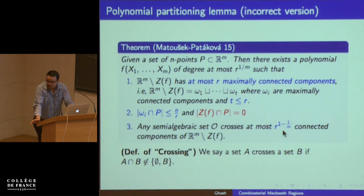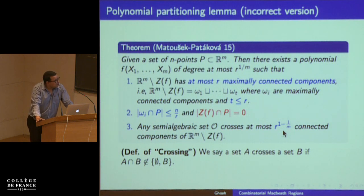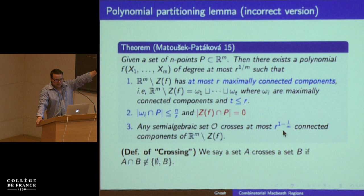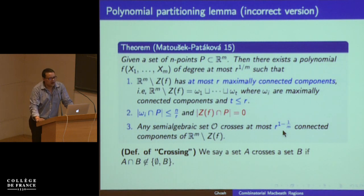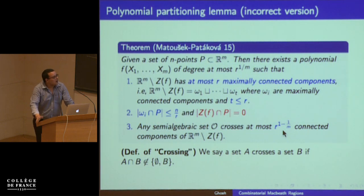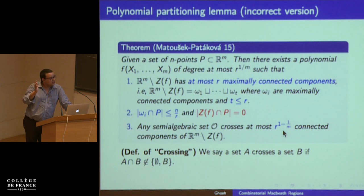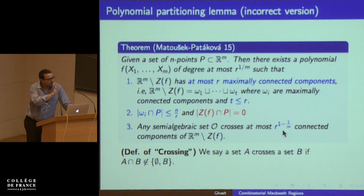The other ingredient is polynomial partitioning. This is a slightly simplified version of the result by Matousek and Patakova from 2015. The statement: given a set of n points P in Rᵐ, there exists a polynomial f of degree at most r^(1/m) such that Rᵐ minus the zero set of f has at most r maximally connected components, each containing at most n/r points from P. Moreover, if you take any semi-algebraic set of constant complexity, it intersects at most r^(1 − 1/m) of these components. For simplicity, assume the zero set contains no points.